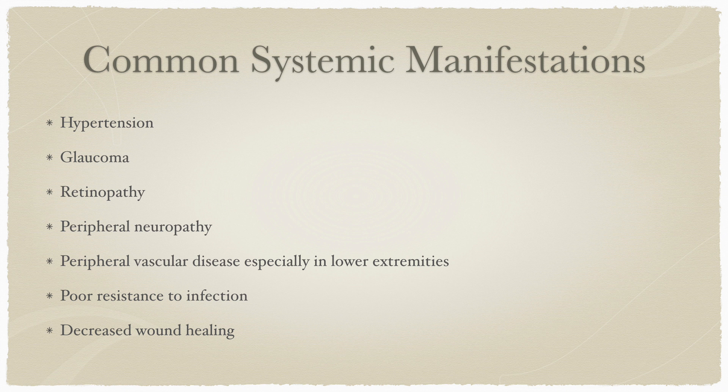The most common systemic manifestations we see are associated with hypertension, glaucoma and high intraocular pressures, retinopathy — a decrease in the neural supply to the retina — and peripheral neuropathy with tingling and numbness in the extremities. One can also notice vascular changes especially in the lower extremities, with peripheral vascular disease. Importantly, these patients have poor resistance to infection and exhibit delayed or decreased wound healing.